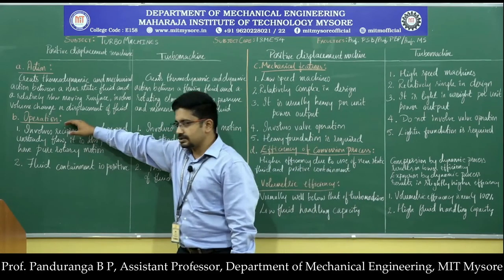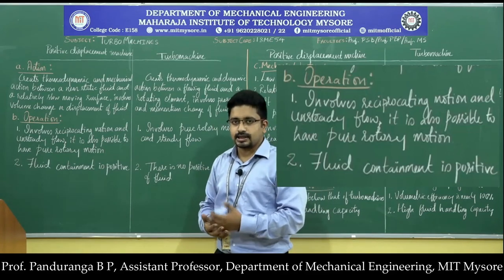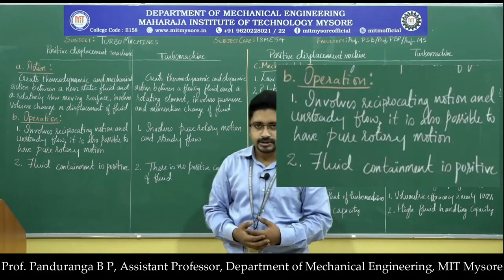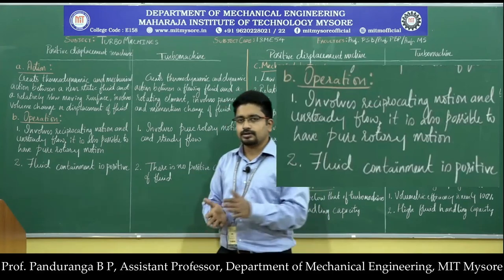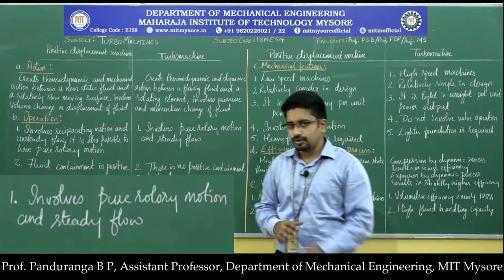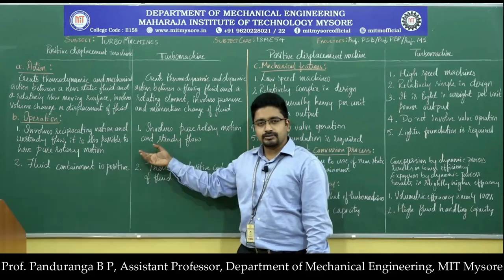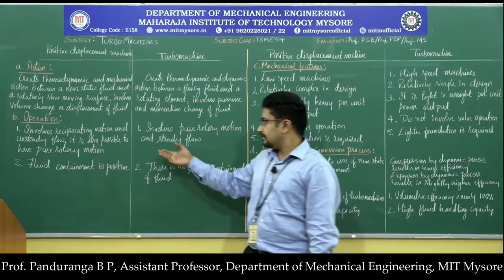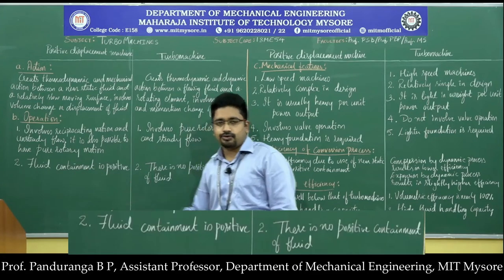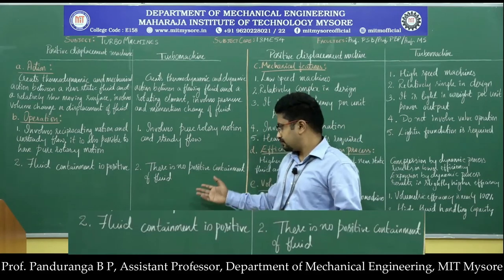Under the heading of operation: a positive displacement machine involves reciprocating motion — in most cases — and this involves the operation of valves, since we need positive containment. This creates additional complexity. In the case of a turbo machine, it involves purely rotary motion with no reciprocating motion. All turbo machines have purely rotary motion, and since the flow is continuous, the flow is steady. In contrast, the flow in a positive displacement machine is unsteady, and the fluid is entirely sealed off from the rest — whereas in a turbo machine, there is no such containment.